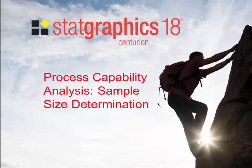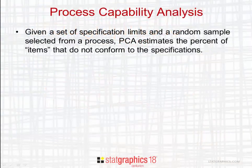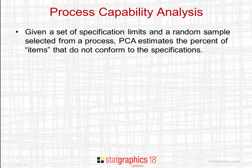This video describes methods for determining an adequate sample size when performing a process capability analysis. Given a set of specification limits and a random sample selected from a process, process capability analysis estimates the percent of items that do not conform to the specifications.